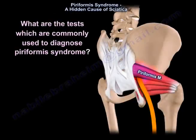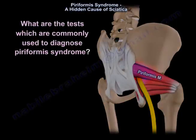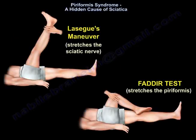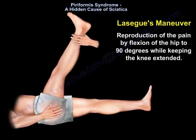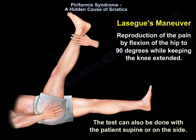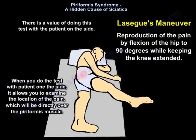What are the tests commonly used to diagnose piriformis syndrome? The Lasègue's maneuver stretches the sciatic nerve and the FAIR test stretches the piriformis. In the Lasègue's maneuver, you reproduce the pain by flexing the hip of the patient to 90 degrees while keeping the knee extended. The test can be done with the patient supine or on the side. When done with the patient on the side, it allows you to examine the location of the pain, which will be directly over the piriformis muscle.